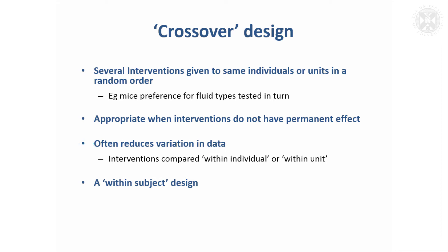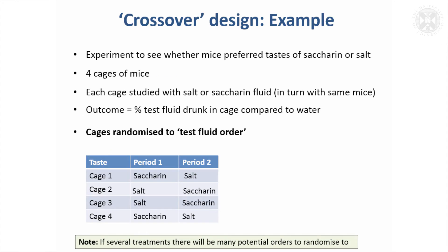This reduces the variability and gives us a more efficient analysis. Sometimes it can be called a within-subject design because we're comparing different interventions within the same individuals or subjects. An example of that: imagine an experiment to see whether mice preferred the taste of saccharin or salt in their water.